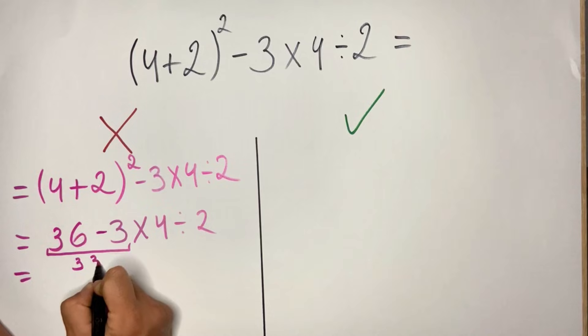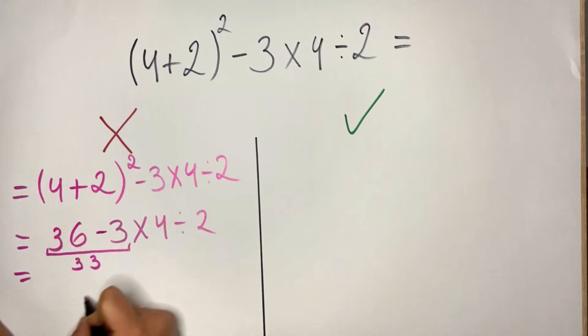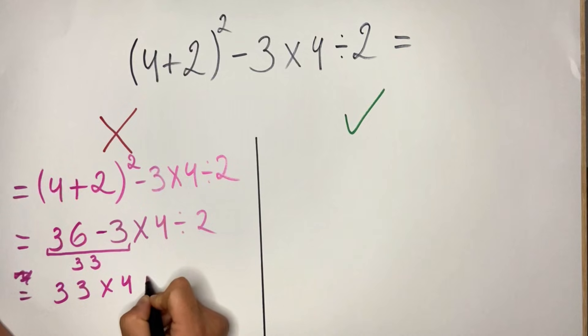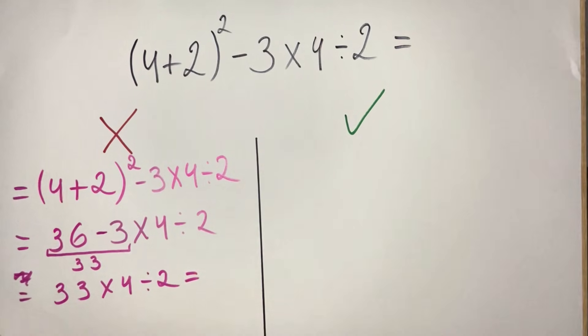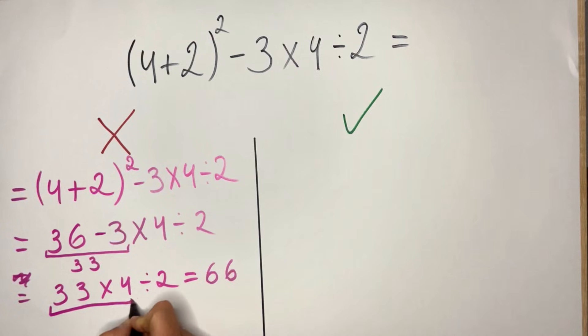The mistake would be to do 36 minus 3, which most people think is 33, and then they continue with multiplication and division. So they get 33 multiplied by 4, which is 132, divided by 2, which is 66. This is not correct.